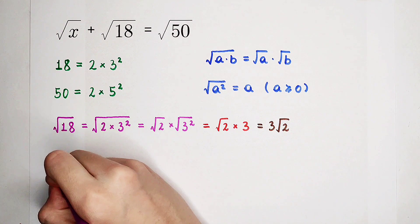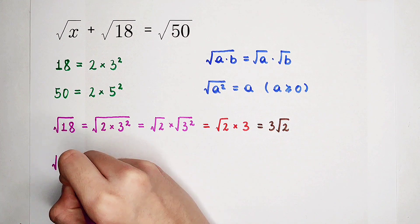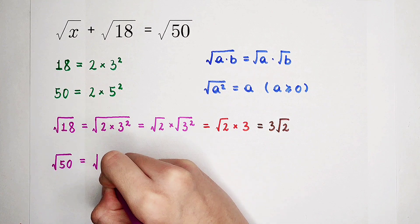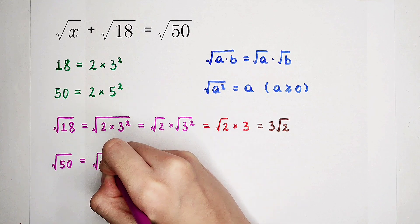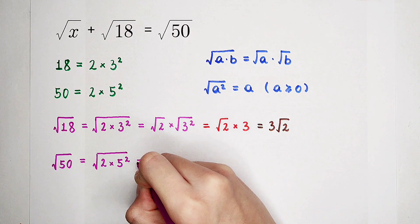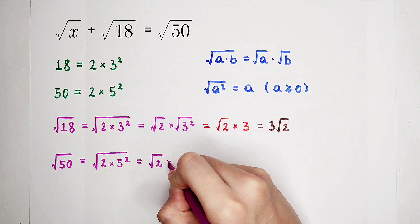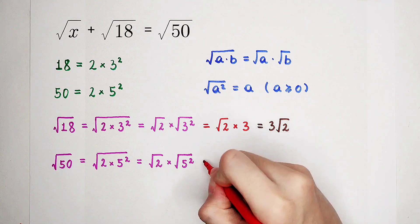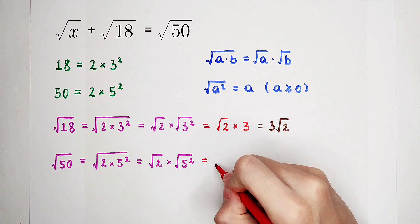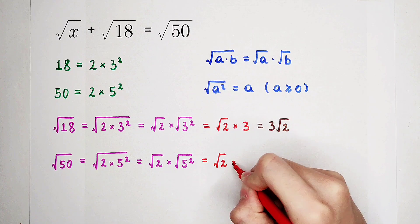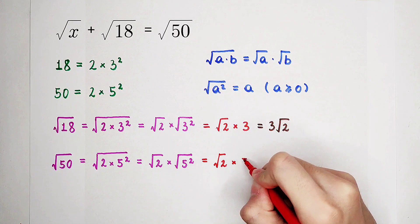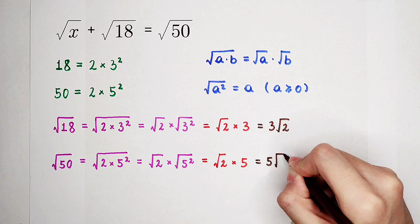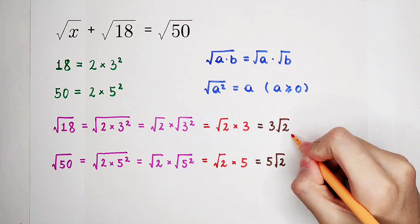By using the same method, square root of 50. It is equal to square root of 2 times 5 squared. And it is square root of 2 times square root of 5 squared. And the result is 5 times root of 2. Successful.